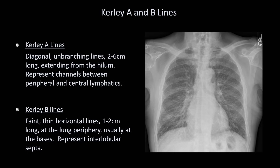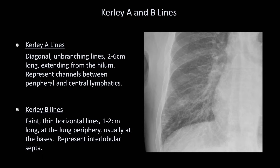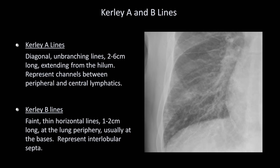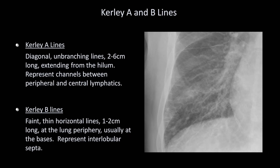In this example, if we zoom in at the right lung base, we can see the tiny, faint horizontal curly B lines, specifically indicating this patient may have mild heart failure.